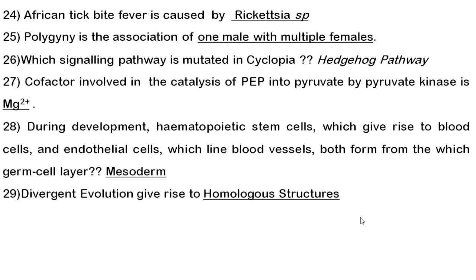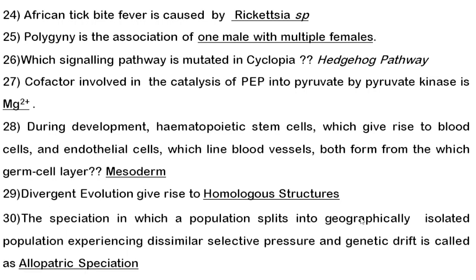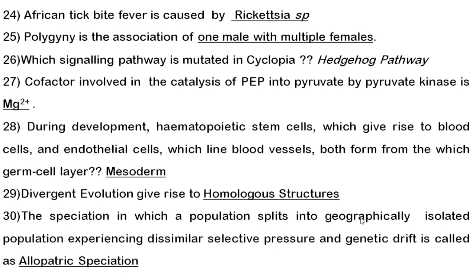Twenty-ninth question: divergent evolution gives rise to homologous structures (remember: DH — Divergent = Homologous), and convergent evolution gives rise to analogous structures (remember: CA — Convergent = Analogous). That's a useful code word to remember.